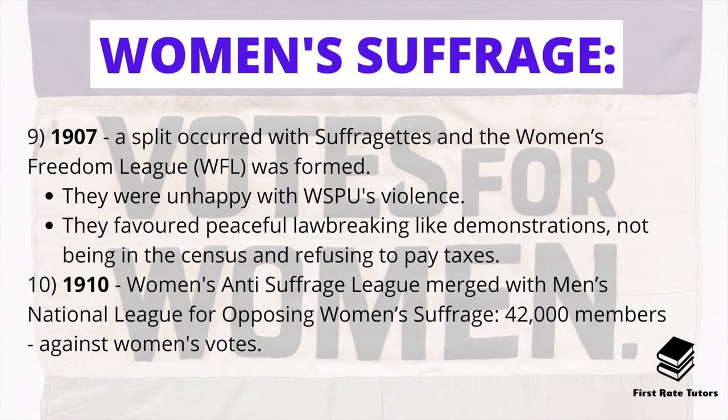In 1907 a split occurred within the suffragettes and the Women's Freedom League, known as the WFL, was formed. This split happened because the women who formed the WFL were unhappy with the violence of the suffragettes and favoured more peaceful law-breaking, such as demonstrations, not counting themselves in the country's census, and refusing to pay taxes.